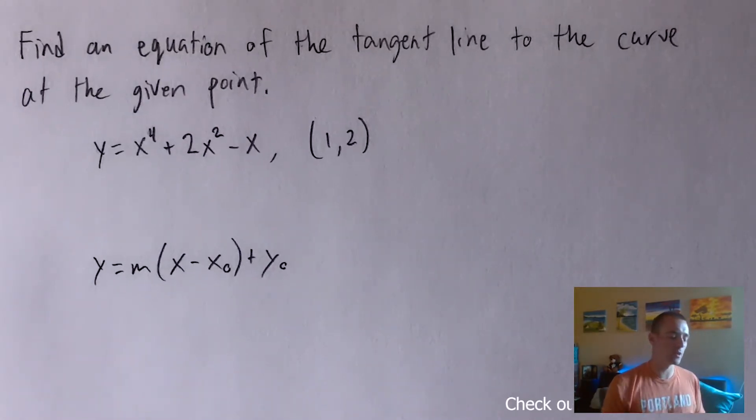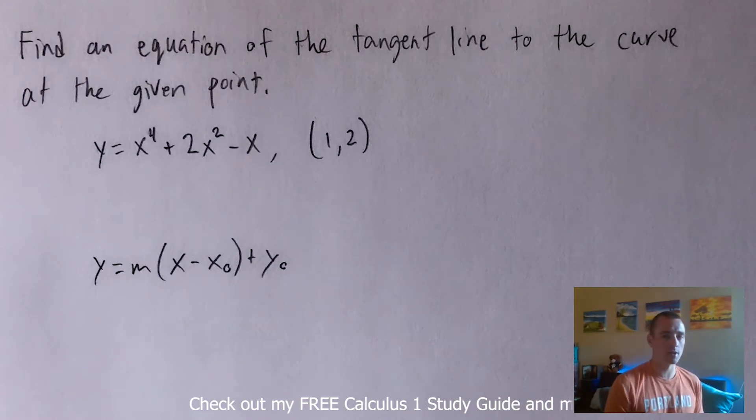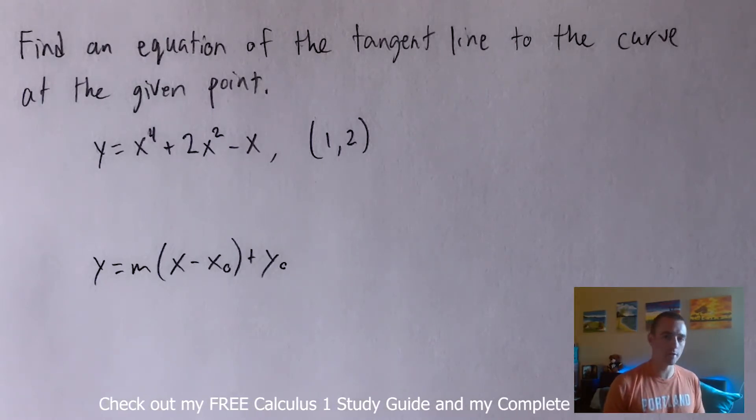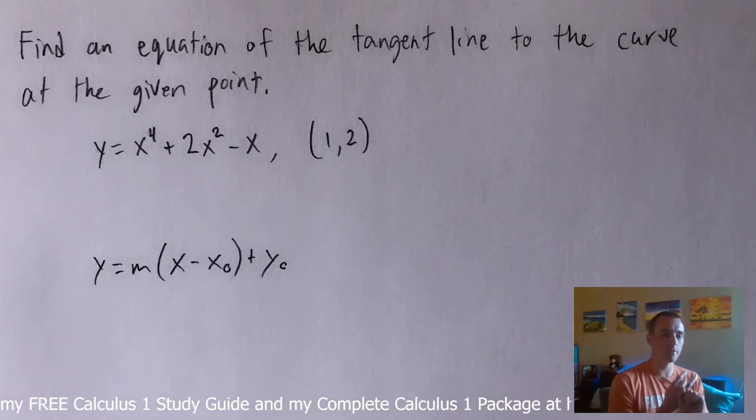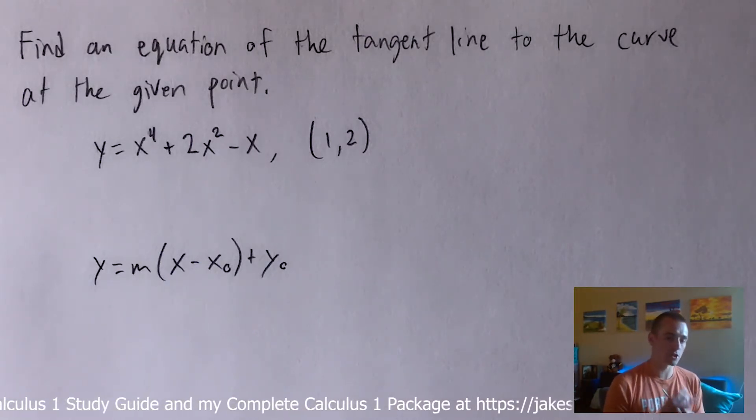Well it's pretty convenient when you're trying to find the tangent line of an equation at a specific point because there's two things that a tangent line has to have in common with the function or the curve at that point. First of all they both have to go through that point. They have to share that point.